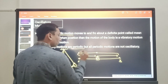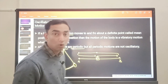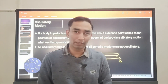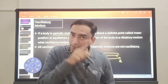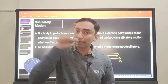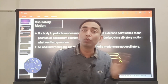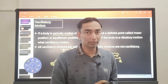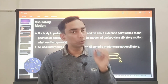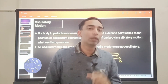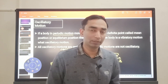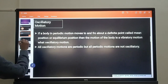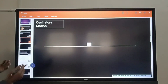It needs to be very clear that all oscillatory motions are definitely periodic, but all periodic motions are never oscillatory. Recall the example of the earth moving around the sun — that is circular motion, not back-and-forth or to-and-fro motion. The earth does not oscillate to and fro around the sun. So all oscillatory motions are definitely periodic, but all periodic motions are not oscillatory.